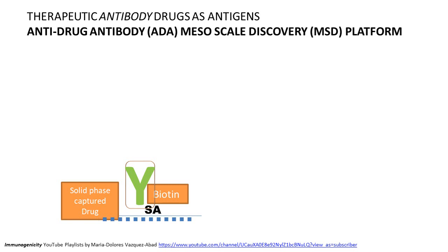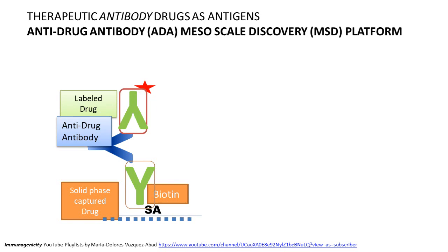Anti-drug antibody detection for drugs that are themselves antibodies — and thus act as potential antigens — is similar to therapeutic protein assays using the MSD platform. The drug is bound to the solid phase; when the patient's blood is run, anti-drug antibodies bind the captured drug. A labeled drug is then brought in, binds the anti-drug antibodies, and a positive result is generated. When your drug is itself an antibody, this can be conceptually confusing, which is why visual aids can help.